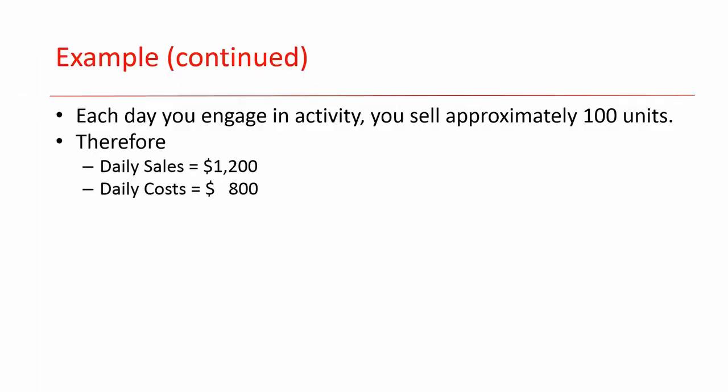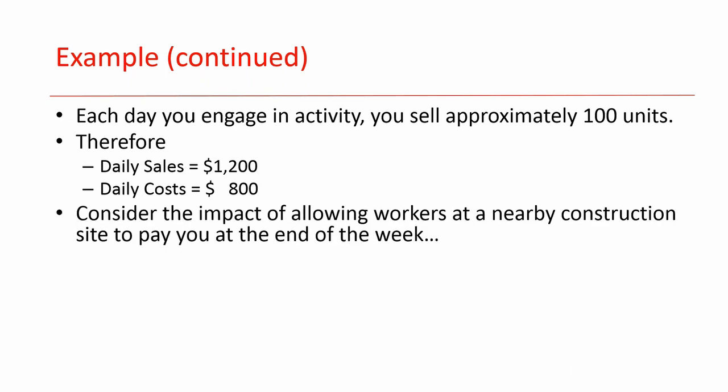Each day you sell approximately 100 units, so your daily sales is $1,200, the daily cost is $800, and you're making $400 profit. If you're doing that every day for five days a week, Monday to Friday, you should be all right. But consider the impact of allowing workers at the nearby construction site to pay you at the end of the week — meaning you decide to give credit. Let's look at what's going to happen.